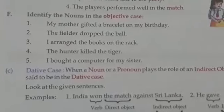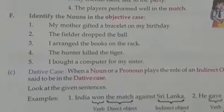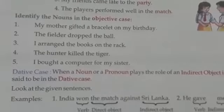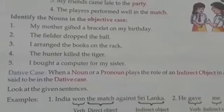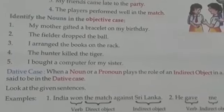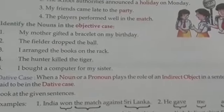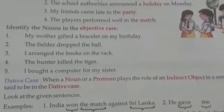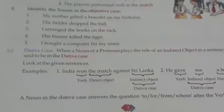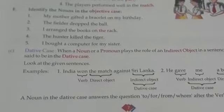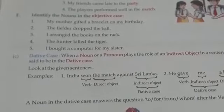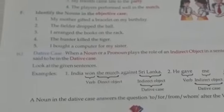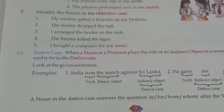The third type of use of noun is the dative case. When a noun or a pronoun plays the role of an indirect object in a sentence, it is called to be in the dative case. Before going through this, I would like to explain what is a direct and indirect object in a sentence.